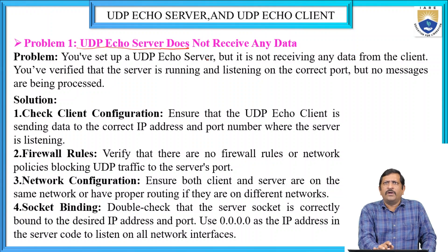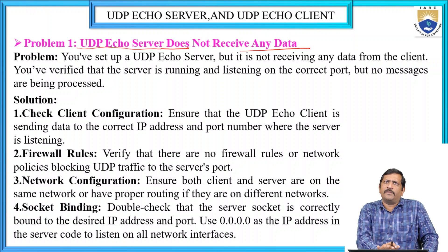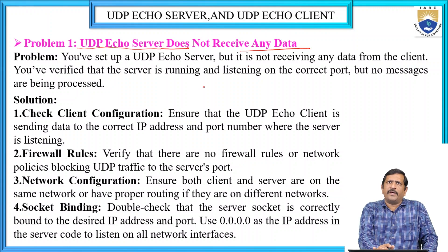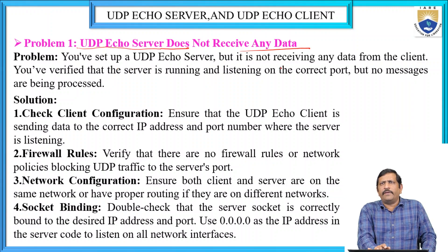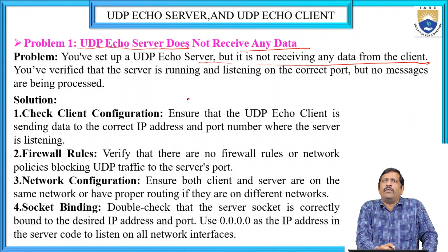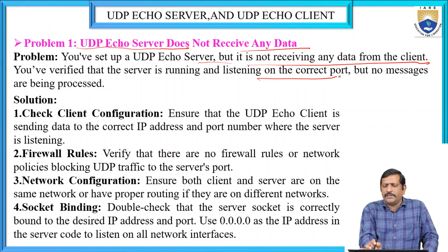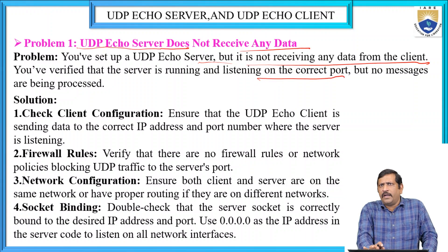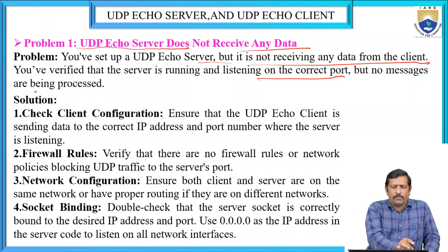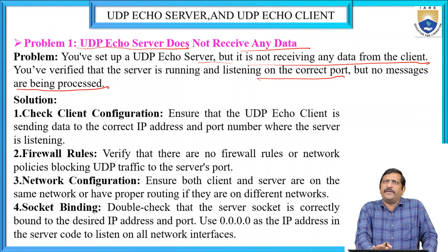The first problem in a UDP Echo Server is that it does not receive any data. You set up a UDP Echo Server, but it is not receiving any data from the client. We have verified that the server is running and listening on the correct port, but data is not received — no messages are being processed. This is the problem at the UDP Server side.